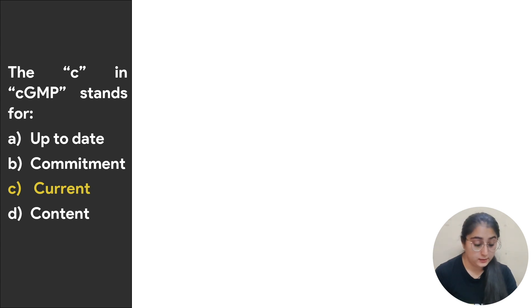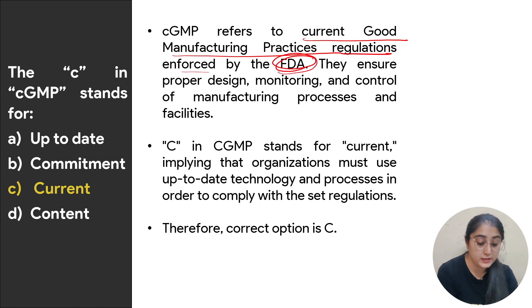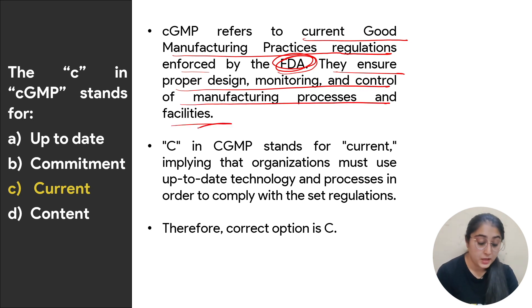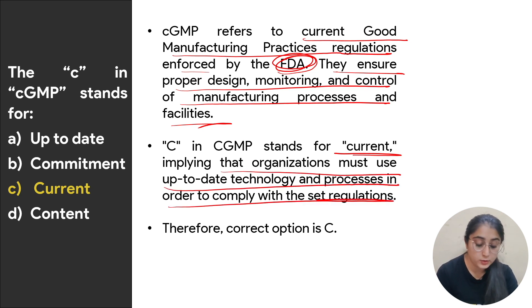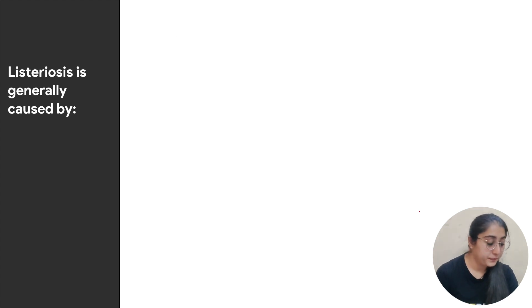Next: the C in cGMP stands for — options are up to date, commitment, current, or content. cGMP refers to Current Good Manufacturing Practices regulations enforced by the FDA, ensuring proper design, monitoring, and control of manufacturing processes and facilities. The C stands for current, meaning organizations must use up-to-date technology and processes. The correct answer is current.